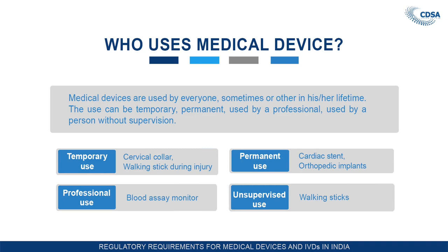Who uses medical devices? Medical devices are used by everyone in their day-to-day life. Use can be temporary, permanent, professional, or unsupervised. Examples include temporary use devices such as walking sticks during injury and cervical collars; permanent use devices such as cardiac stents and orthopedic implants; professional use devices such as blood assay monitors; and unsupervised use devices such as walking sticks.